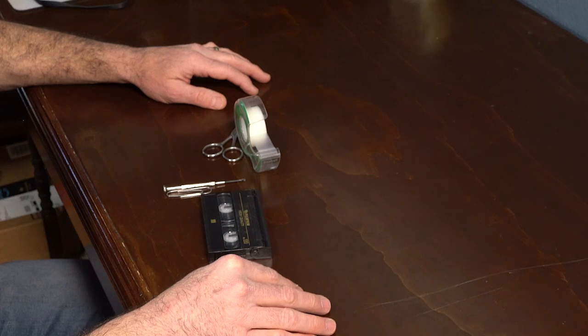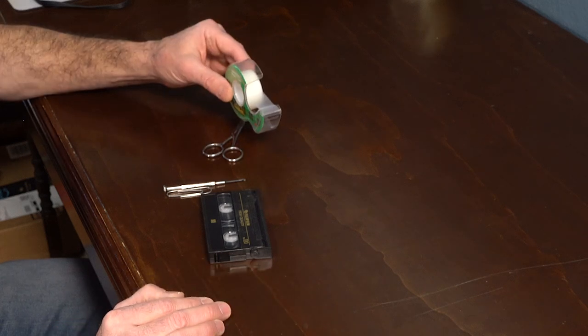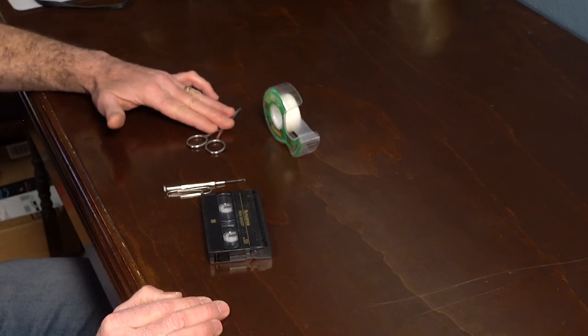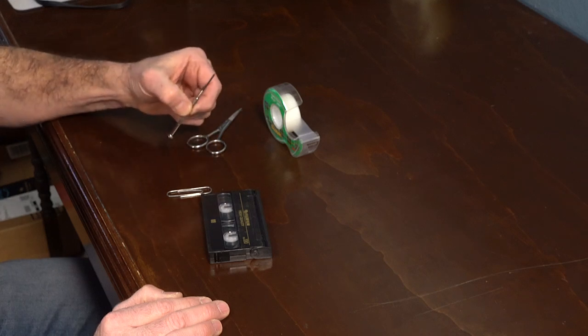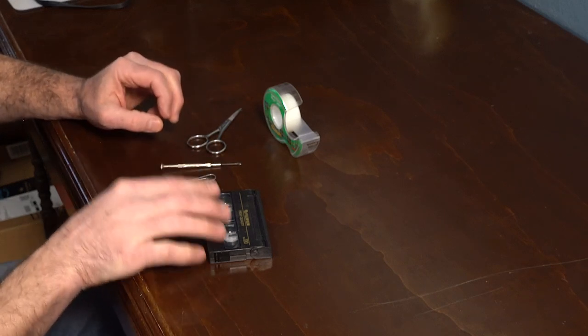To repair an 8mm tape, you need a few things: plastic transparent tape, mini scissors, a small screwdriver, a fairly large paper clip, and of course the tape.